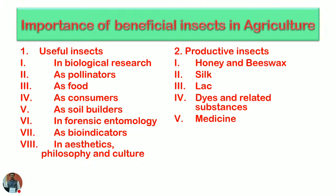What are the insects useful in our day-to-day life? We can use those insects in biological research, as pollinators, as food, as consumers acting in the ecosystem or environment, as soil builders, in forensic entomology, as bio-indicators, or in aesthetics, philosophy, and culture.